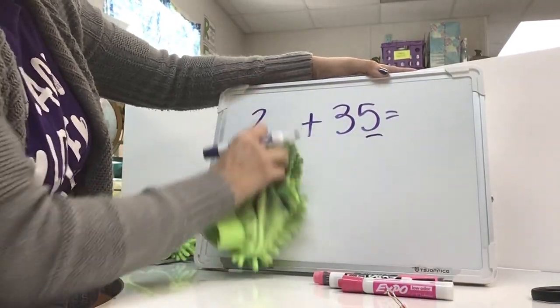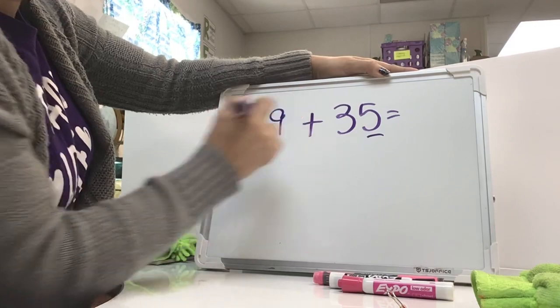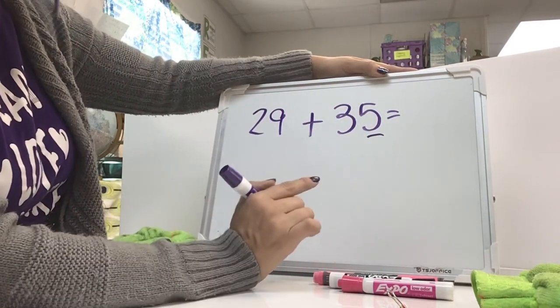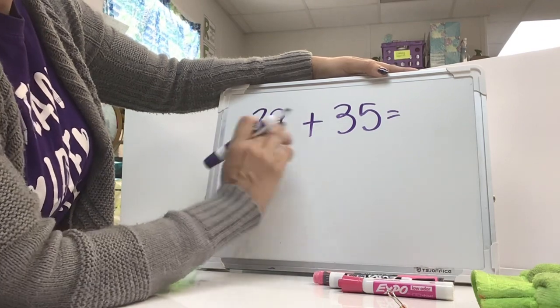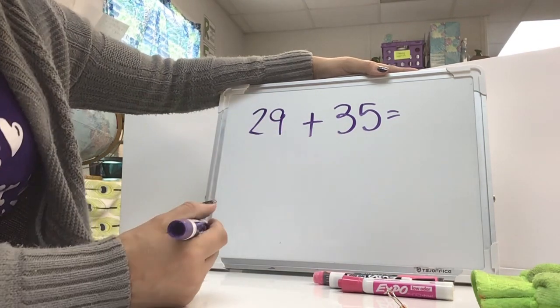But if it was instead of 2 plus 5, if it was 9 plus 5, that would regroup the ones place. And so you would be able to use compensation on a problem such as this.